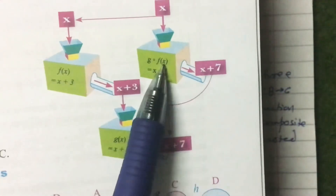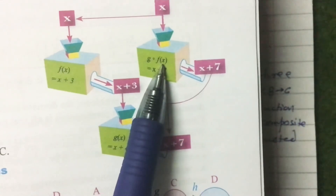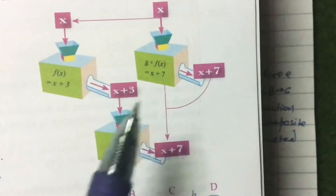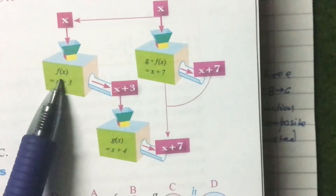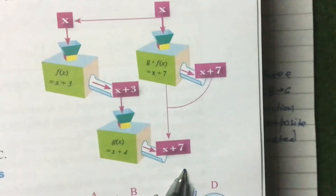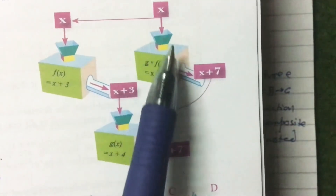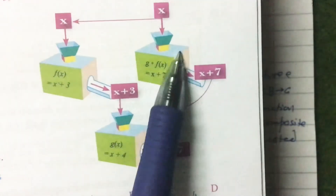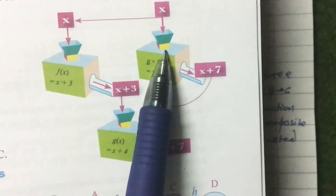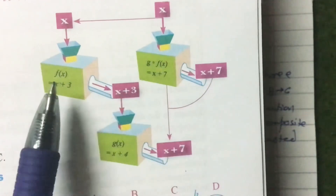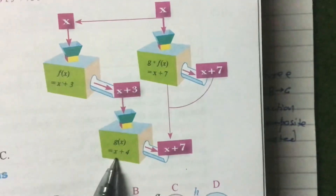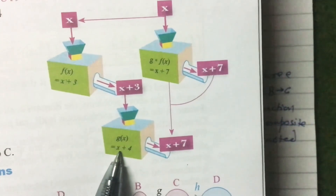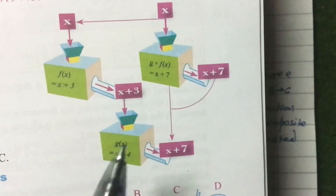The third machine, g(f(x)), will perform the function x plus 7. So the composite function performed by f(x) and g(x) is the same as the function performed by the third machine, g of f(x). This figure clearly illustrates what a composite function is.